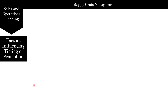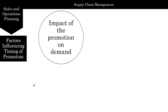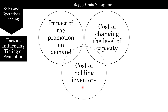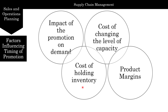We can offer promotions — such as price discounts — to either increase market size, steal market share, or influence forward buying. When evaluating promotions, you need to look at the cost of holding inventory, especially if it creates a huge spike in demand. You also need to look at the cost of changing capacity — whether you are creating a demand spike or smoothing demand out. Finally, it's important to focus on product margins: revenue minus cost per unit.